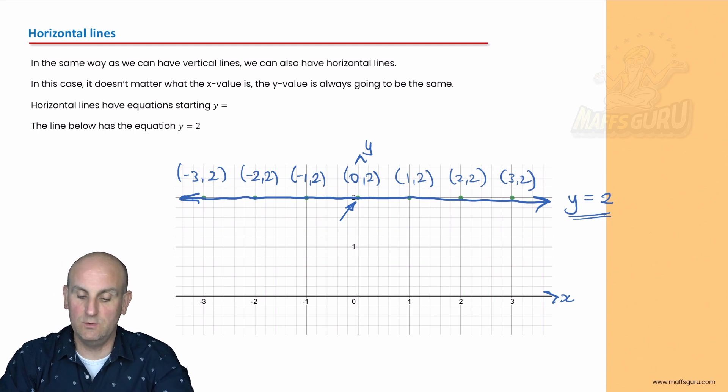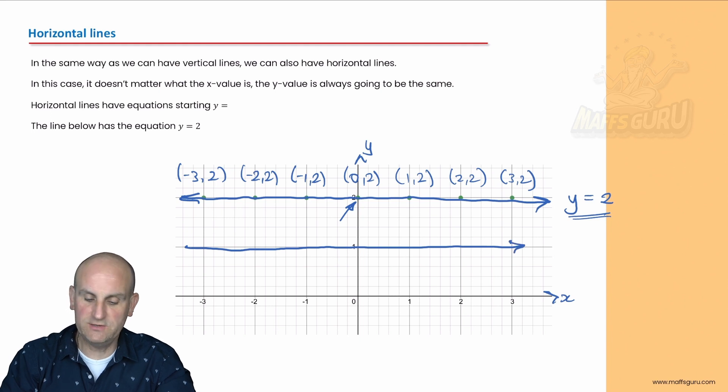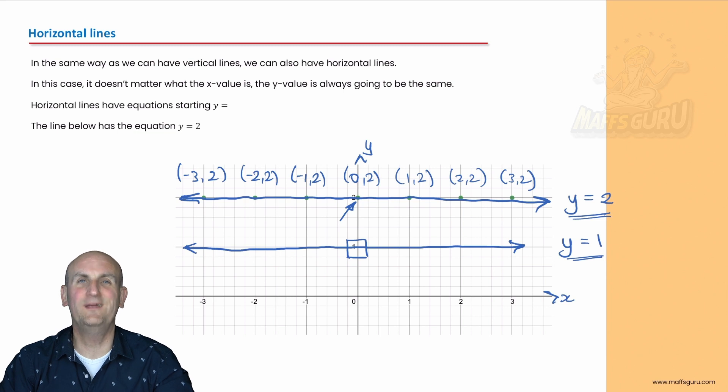A horizontal straight line begins with y equals and all you need to do is see where it cuts the y-axis. If I had a straight line going through there, where does it cross? It crosses at 1, so my horizontal line would be y equals 1.